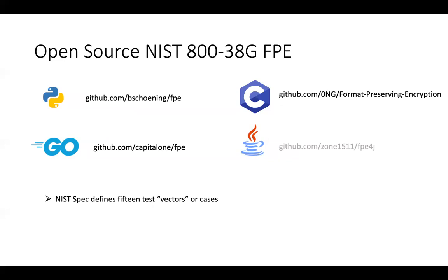There are at least four format-preserving encryption implementations on GitHub for different languages: I created one for Python, there's one for Go, one for C, and one for Java — though the Java one is about four years old and somewhat difficult to use, so I'm building a new one. When using these open source libraries, keep in mind that NIST has defined 15 test vectors — plaintext together with a key and tweak with a known encrypted output — and all conformant implementations should pass those test vectors.